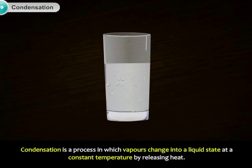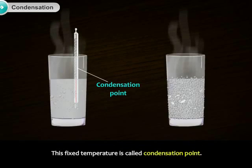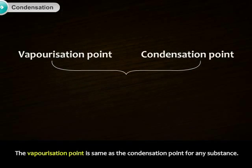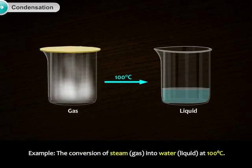Condensation is a process in which vapors change into a liquid state at a constant temperature by releasing heat. This fixed temperature is called the condensation point. The vaporization point is the same as the condensation point for any substance. For example, the conversion of steam into water at 100 degrees Celsius.